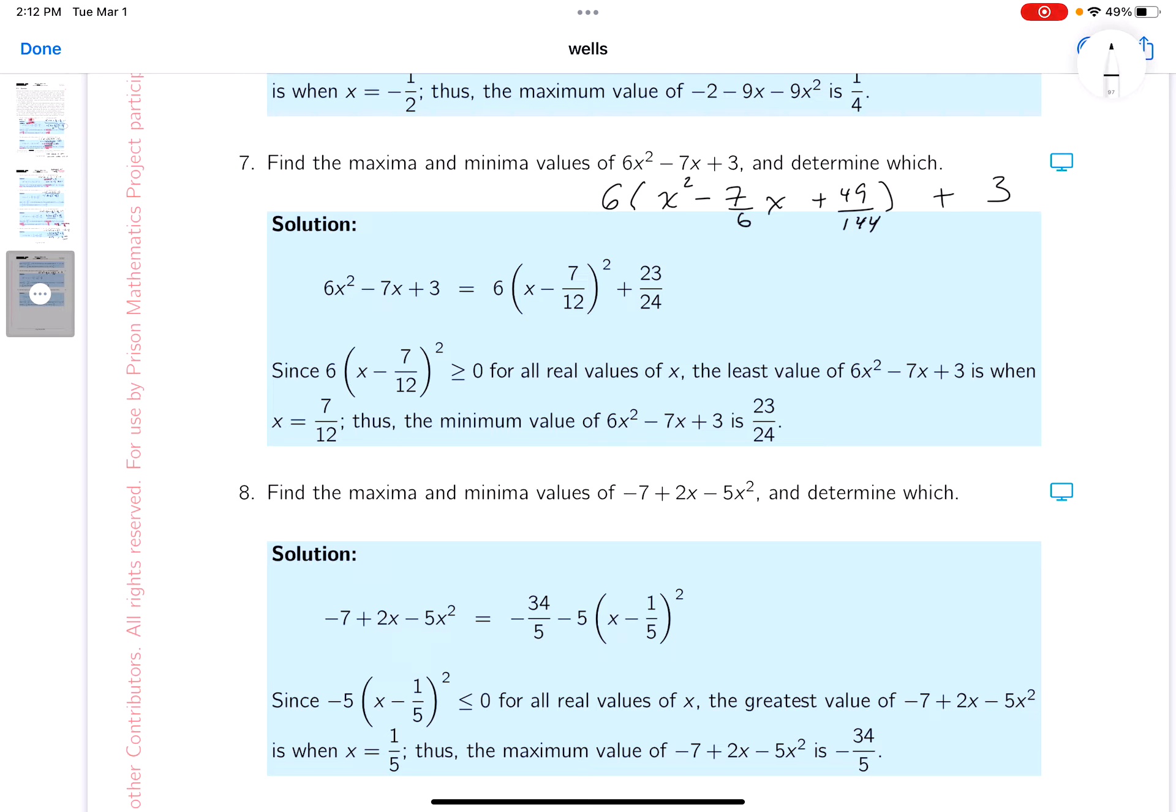So it's going to be, let me write that down for you. 6x49 over 144 is going to be 49 over 24.